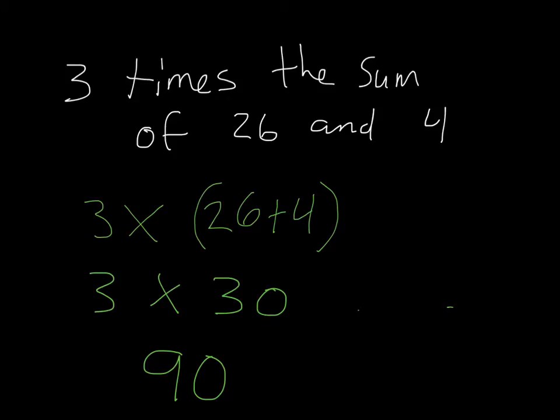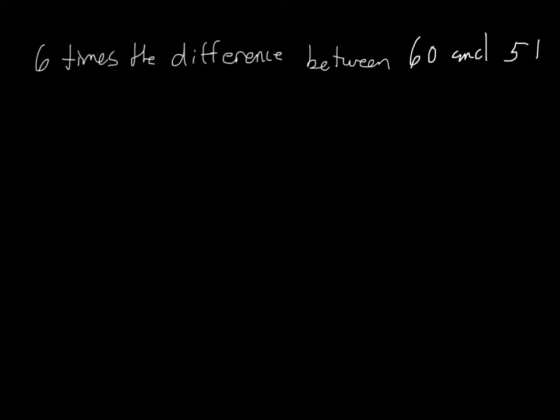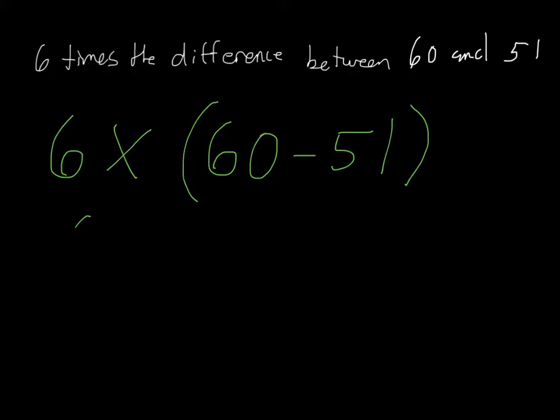Let's look at another. So, six times the difference between 60 and 51. Left to right: six times, times is multiply. The difference, which is subtraction, 60 minus 51. And remember, this is six times 60 minus 51, so that will go inside the parentheses. Bring it down. Six times, 60 minus 51 is 9. Six times 9 is 54.